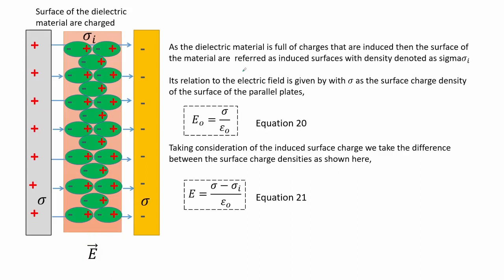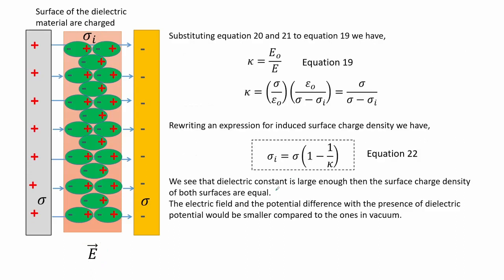Deriving an expression for capacitance with dielectric material: since the dielectric material contains induced charges, the surface is referred to as an induced surface with charge density denoted sigma i. Its relation to the electric field is given by sigma as the surface charge density of the parallel plates by equation 20. Taking the induced surface charge into consideration, we take the difference between the surface charge densities as shown in the numerator of equation 21. Substituting equations 20 and 21 into equation 19, we get an expression for the dielectric constant. Rewriting this, we obtain an expression for induced surface charge density as equation 22.